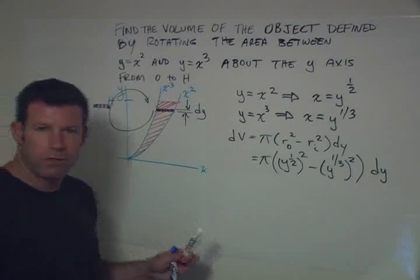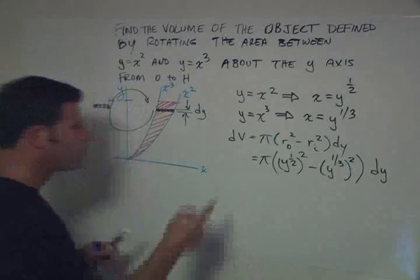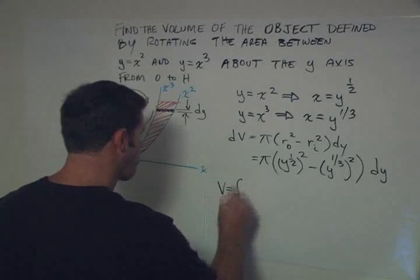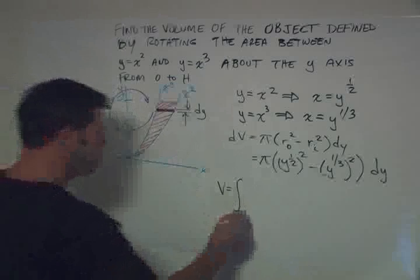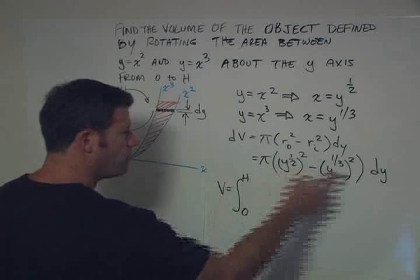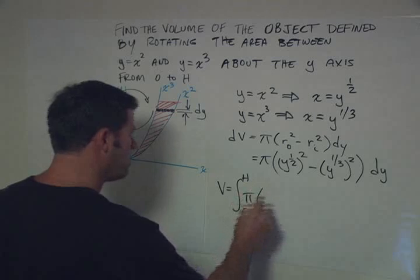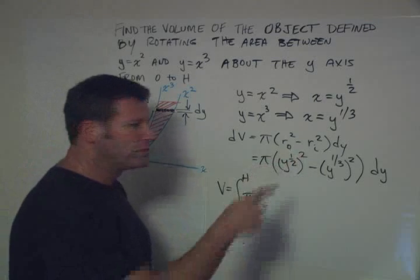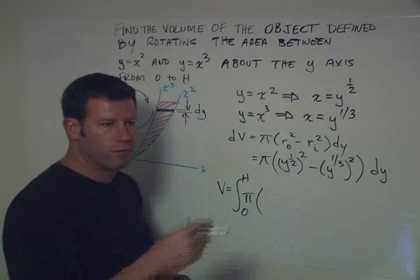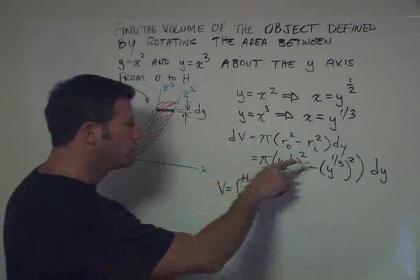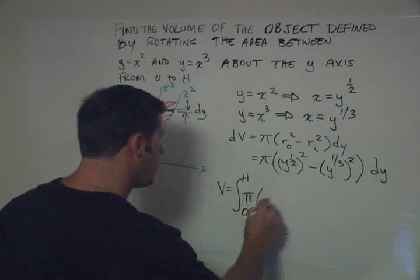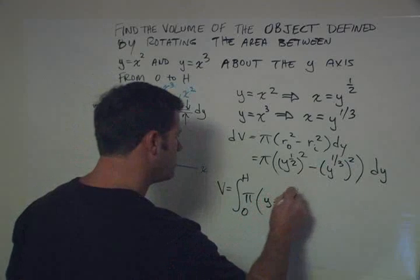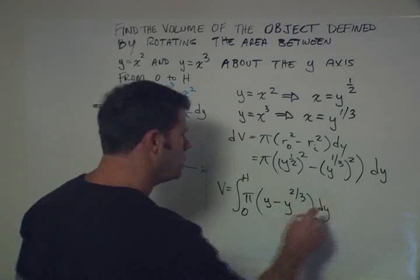Okay, we're getting pretty darn close to the solution already. Now we just need to integrate. So we're going to say v, then, is the integral from zero to h of this whole thing, pi. So y to the one-third squared, we multiply exponents when we have one power raised to another. So two times one-half is one, so this is going to be y. And then one-third squared is going to be minus y to the two-thirds, dy. Well, now it's a simple polynomial integration.